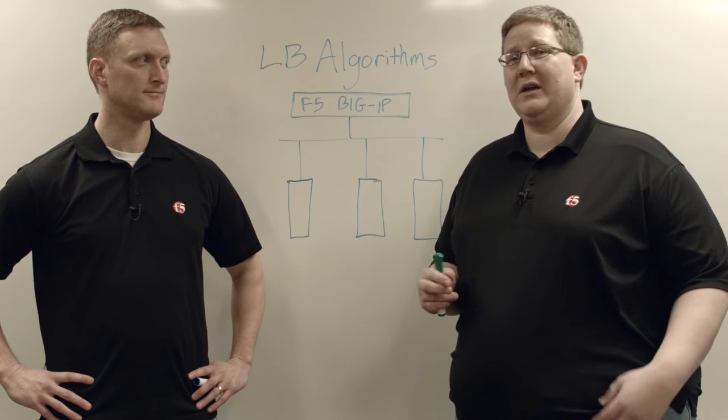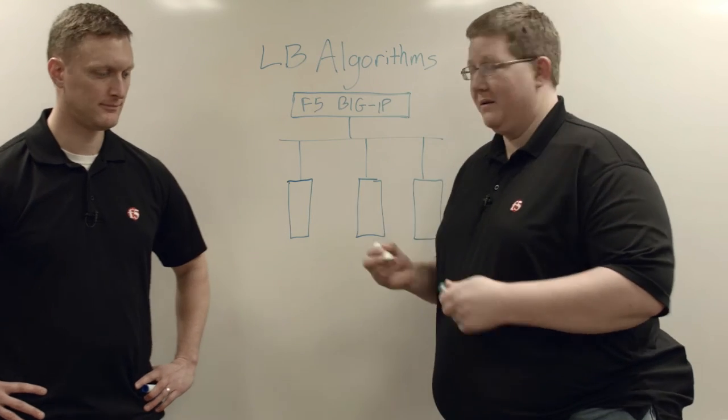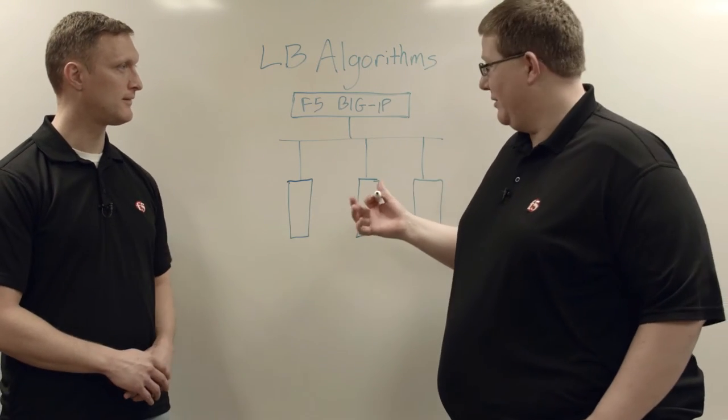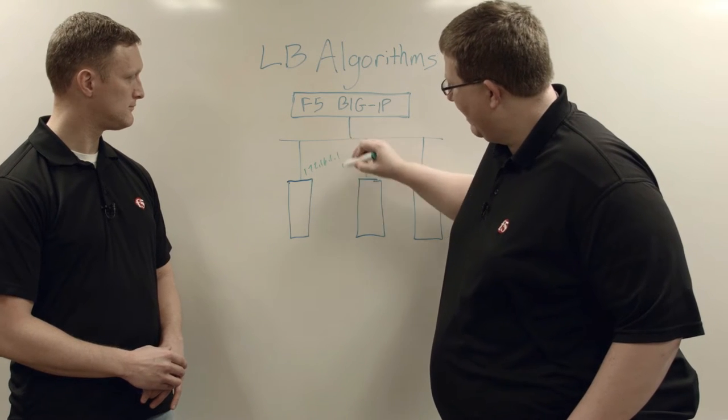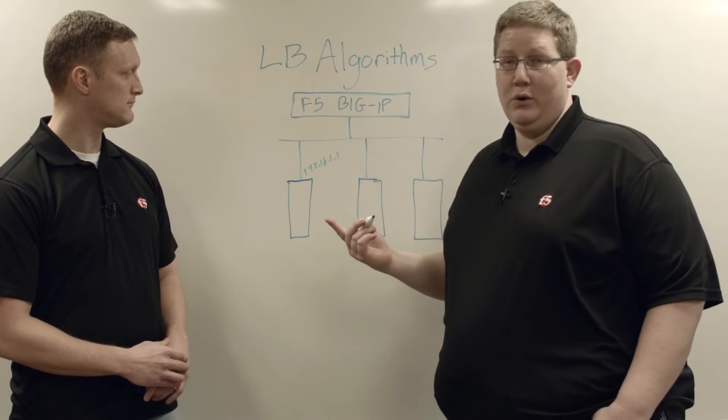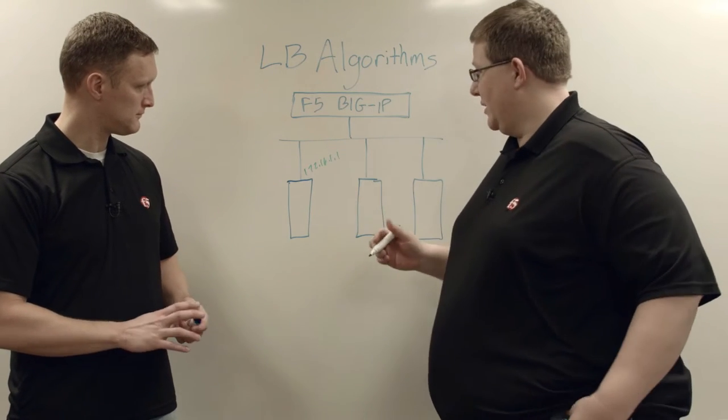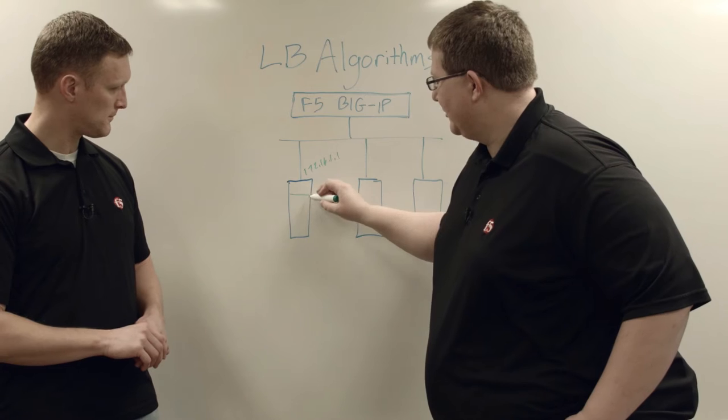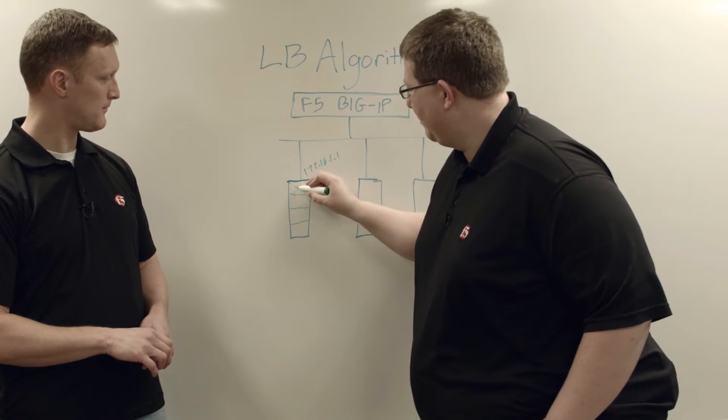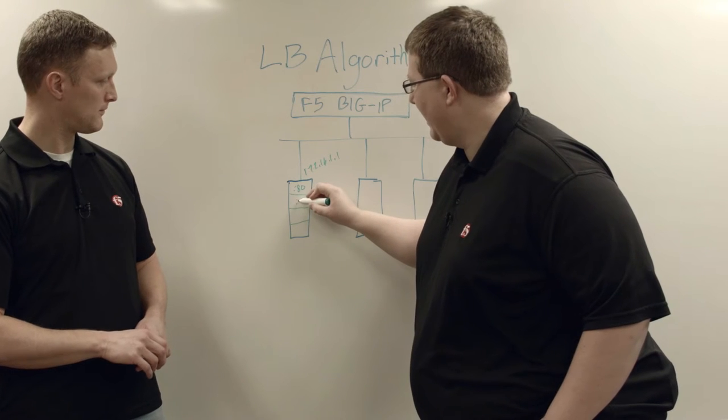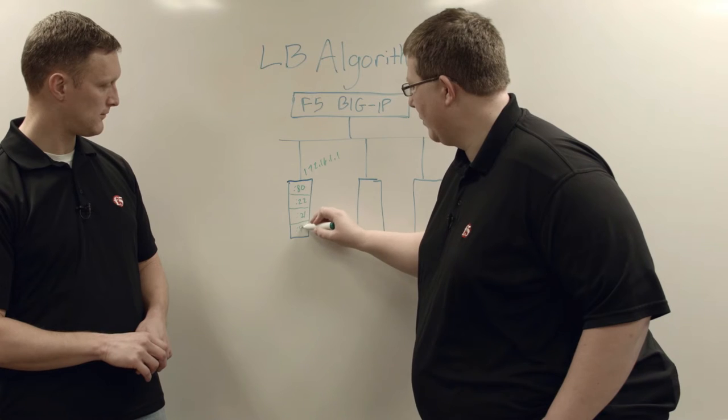And then there's also the concept of node versus member. A node, if you look at how a node is represented on the BigIP, it's an IP address. So 172.16.1.1 is a node. And then if I had one or more services on that, then that might be partitioned off of that node. I might have a port 80 member, and I might have a port 22 member, or a 21 member, or a 443 member.